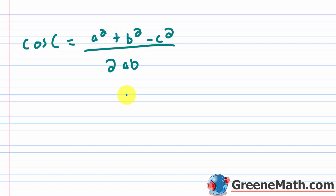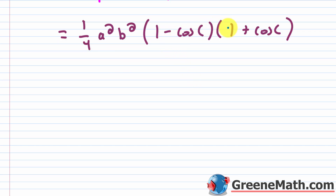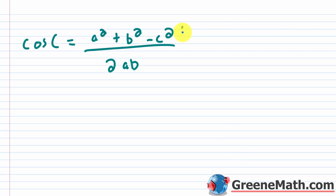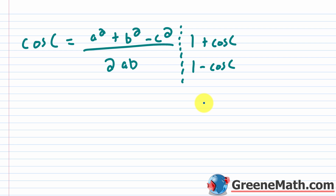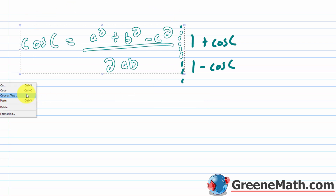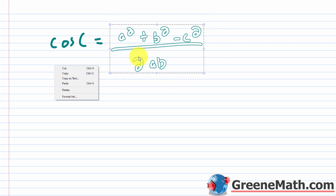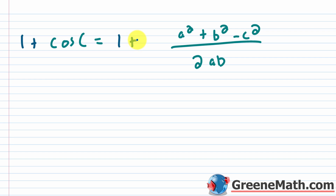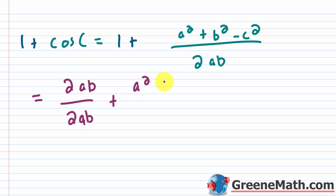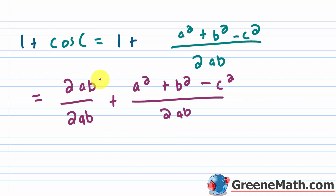Now we go back and need to find both 1 plus cosine C and 1 minus cosine C. Starting with 1 plus cosine C: we add 1 to both sides of the cosine C expression. Writing 1 as 2AB over 2AB to get a common denominator, we then add: 2AB over 2AB plus (A squared plus B squared minus C squared) over 2AB. Now we can combine the two numerators.